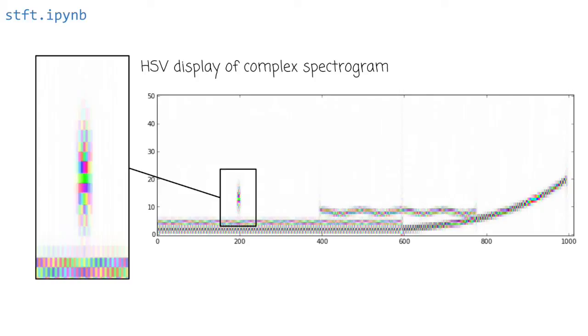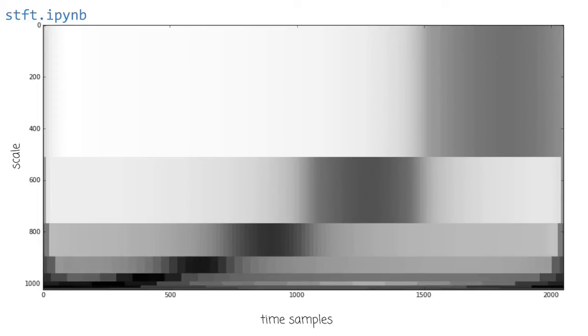And just to sort of show what I mean by a sort of the funky tiling that you get with these variable scale transforms, this is the S-transform on a chirp. And as you can see.